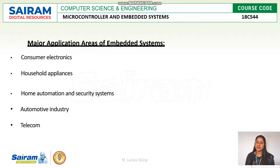Home automation and security system applications include fire alarms, air conditioners, and smoke and gas detectors. In the automotive industry, examples include ABS (anti-lock braking system), engine control, and automatic navigation systems.